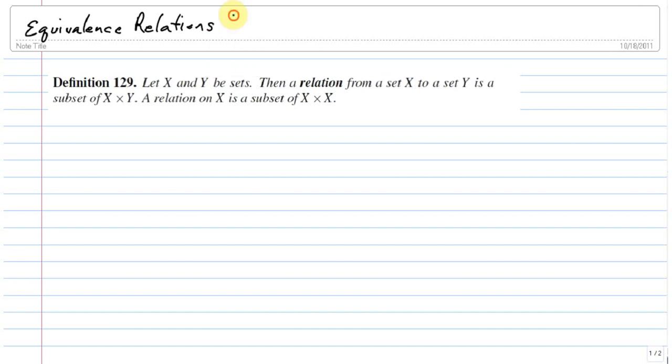First let's look at the definition. Definition 129 says, given two sets, then a relation from set X to set Y is a subset of the product of the two sets, and a relation on a single set is a subset of the product of that set with itself.